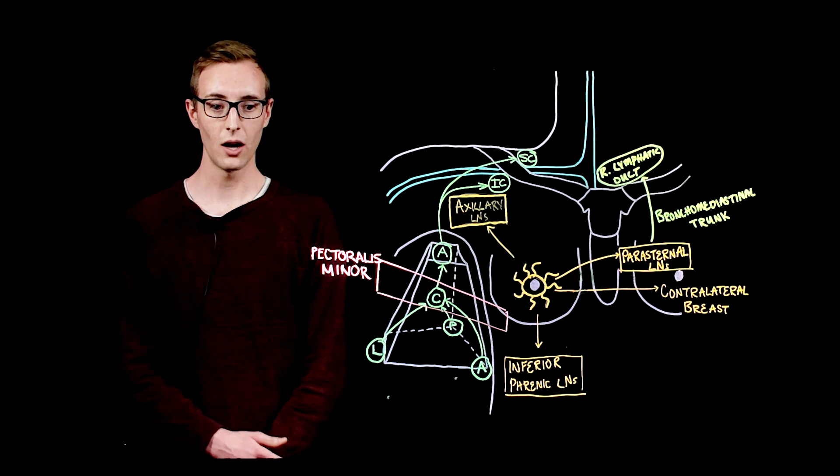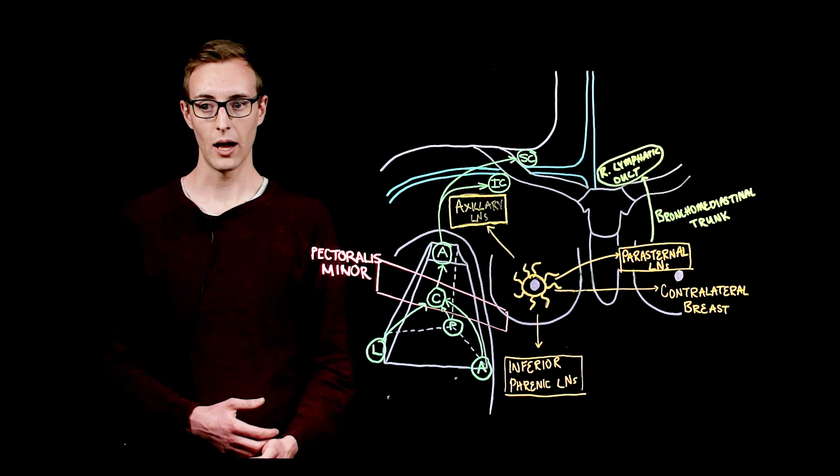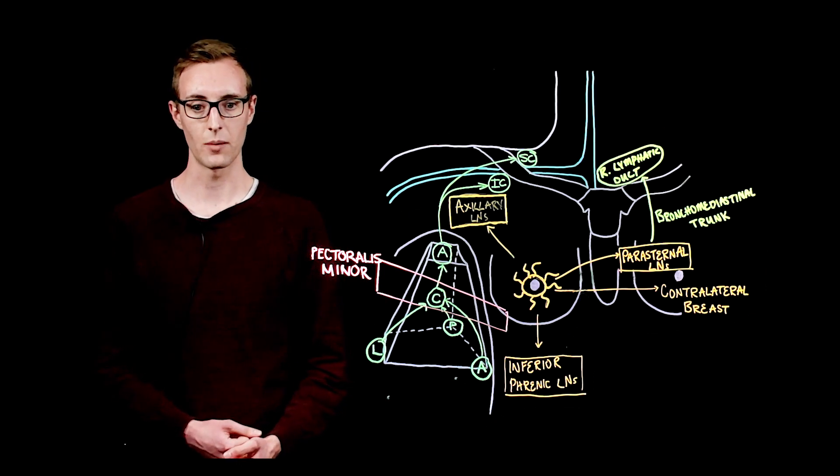Nodes in levels one and two are superficial and are more easily palpated during the breast examination. Level three nodes are deeper and are therefore harder to palpate during the breast examination.